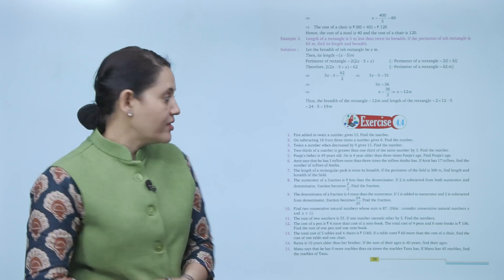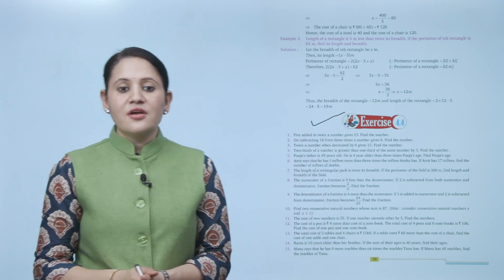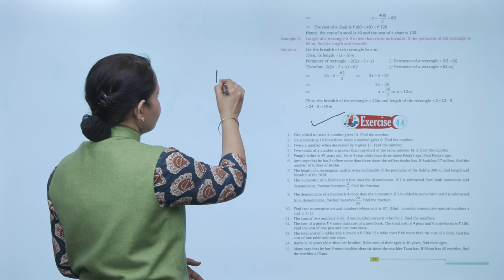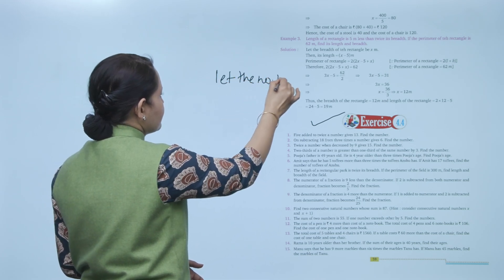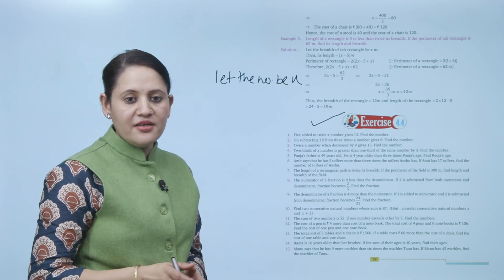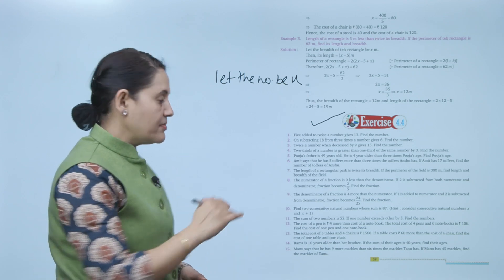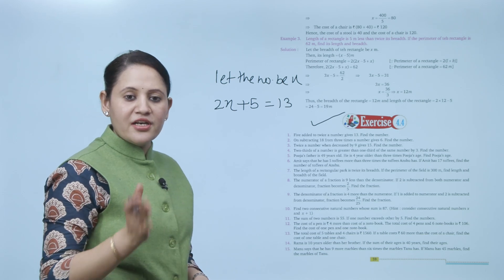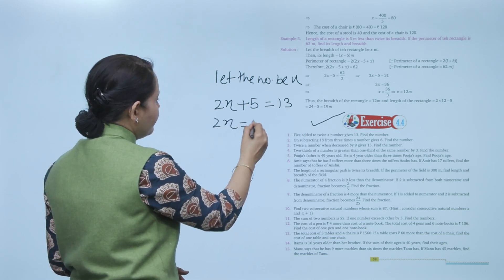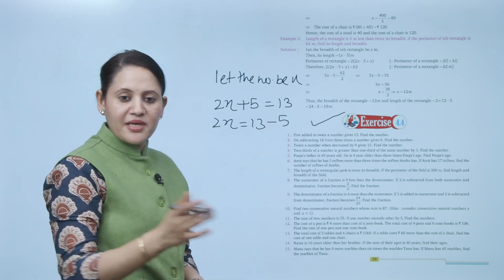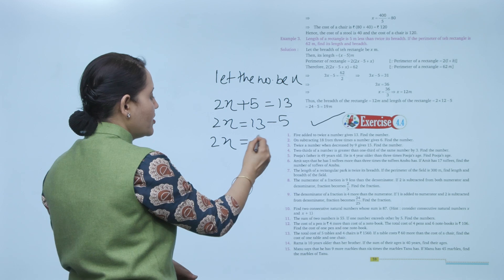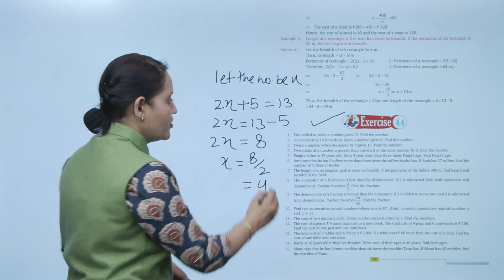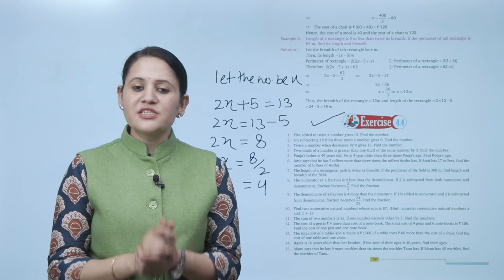Next is Exercise 4.4: 5 added to twice a number gives 13, find the number. Let the number be x. Twice a number is 2x, and adding 5 gives 2x plus 5 equals 13. Transposing 5 to the other side gives 2x equals 8, so x equals 8 upon 2, which equals 4. The required number is 4. Practice all the questions of this exercise.